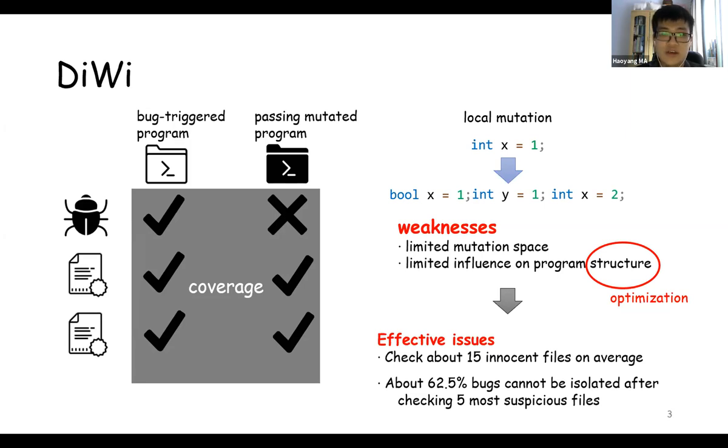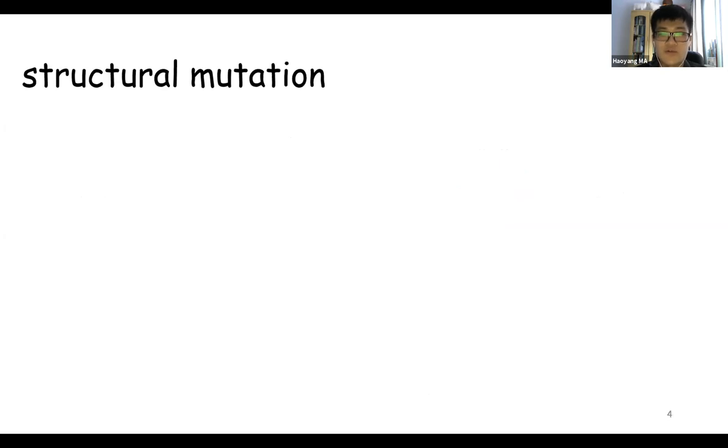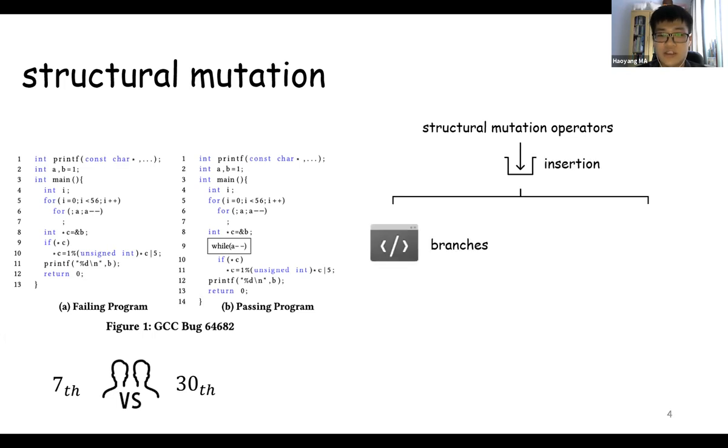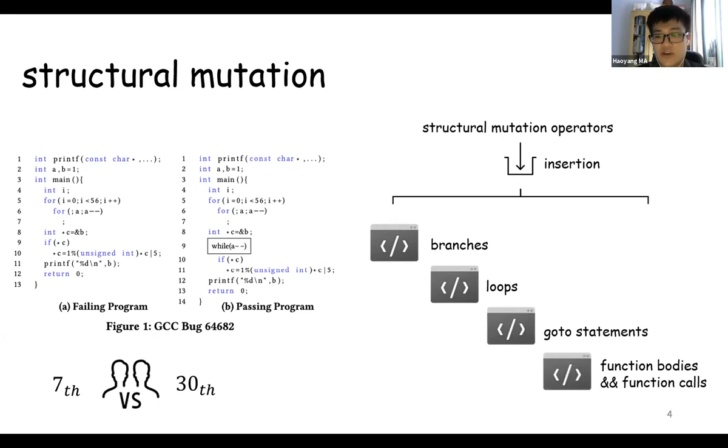To improve the situation, we propose Rugby. Rugby involves a new mutation strategy called structural mutation. Here's an example: figure A shows a bug triggered program which fails during compilation. By inserting a while loop into it, we can turn it into the program in figure B, which is a passing mutated test program. To implement this, we have four structural mutation operators: inserting branches, inserting loops, inserting goto statements, and inserting function body as function calls. We call all of these ready to be inserted as ingredients.